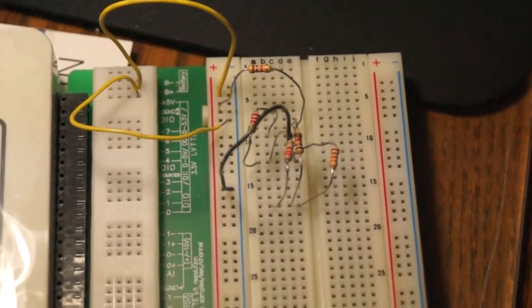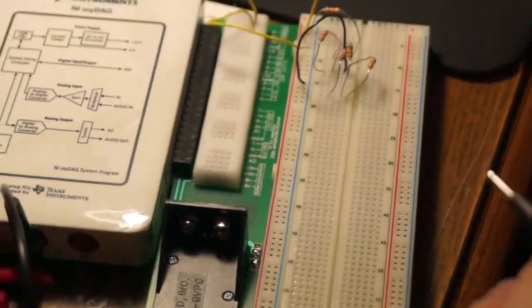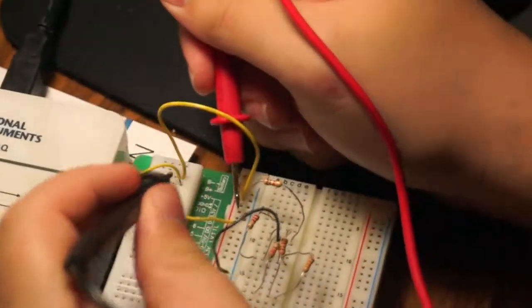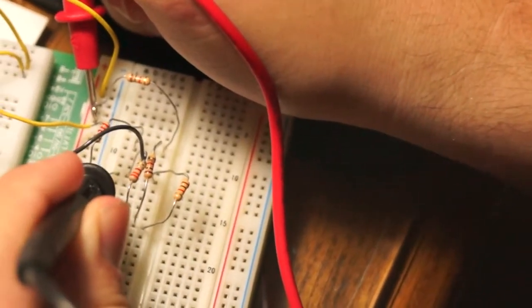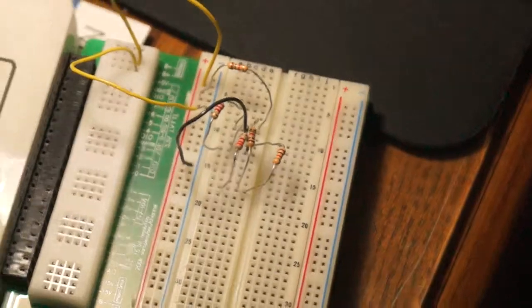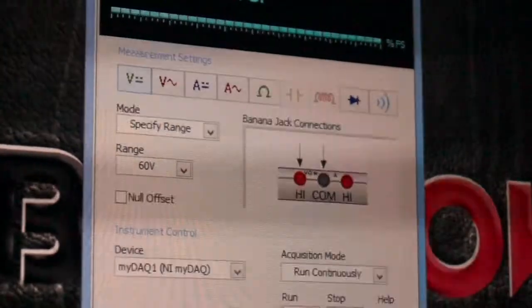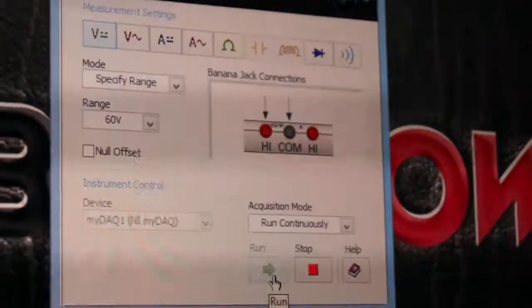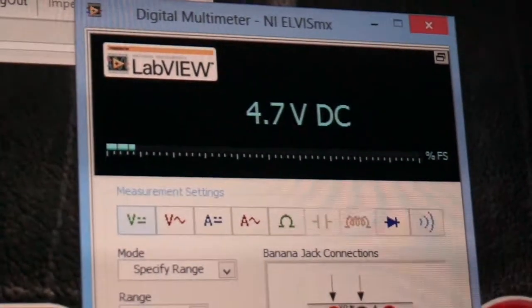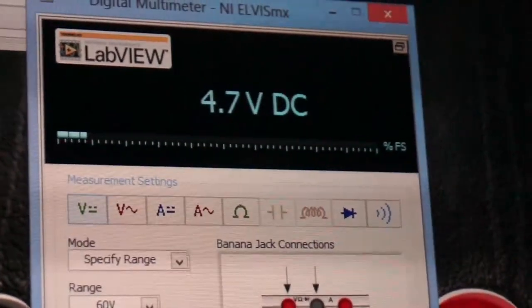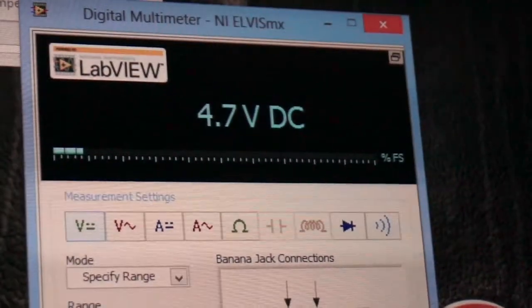Now, the next thing you should do is measure the voltage across the entire circuit to find the value of V1. To do this, measure from the beginning of the circuit at R1 here, to the end which is any one of these points here. On screen, click to measure DC voltage and set the range to 60 volts. Then click run. We get about 4.7 volts, which is the value of V1 for this circuit. Record the value that you get.